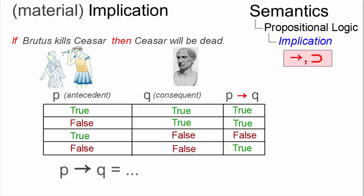And if both P and Q are false, as in, if Brutus did not kill Caesar, then Caesar will not be dead, the implication is true too.